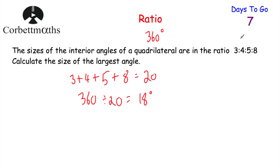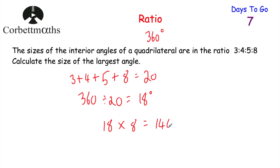To find each angle we'd multiply 18 by each part. But the question only asks for the largest angle, which corresponds to the part 8. So 18 multiplied by 8 equals 144 degrees. The size of the largest angle in this quadrilateral is 144 degrees. Well done if you got that.